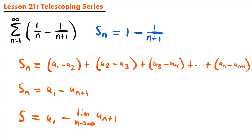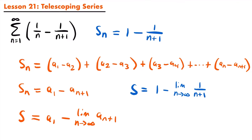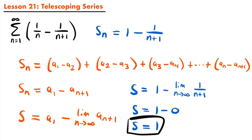Looking at our partial sum for this specific telescoping series, s equals 1 minus the limit as n approaches infinity of 1 divided by n plus 1. As n approaches infinity, the denominator increases towards infinity, so we have a fixed value of 1 divided by an increasing denominator, which goes to 0. So s equals 1 minus 0, which means s equals 1. This telescoping series converges to 1.